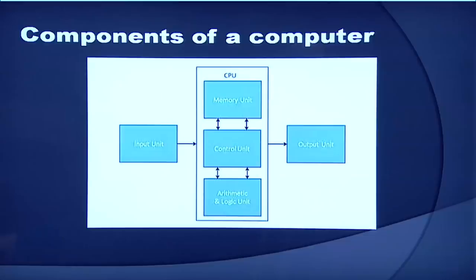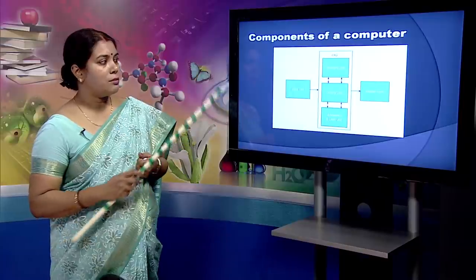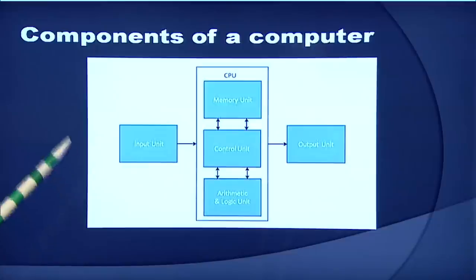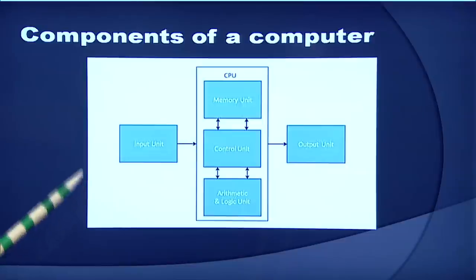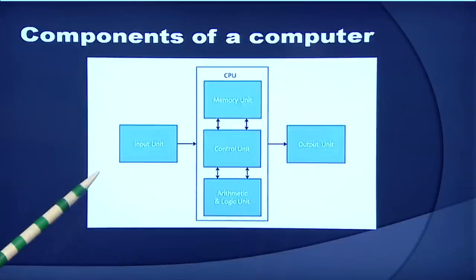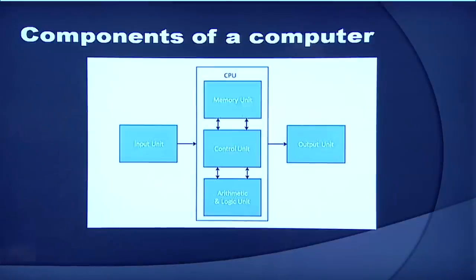CPU itself has got many parts: the memory unit, the control unit, and the arithmetic logical unit. The output unit is a device which will actually display the result after the computer processes the data using the CPU. The output unit converts computer-understandable data into human readable form and displays it on the output devices.